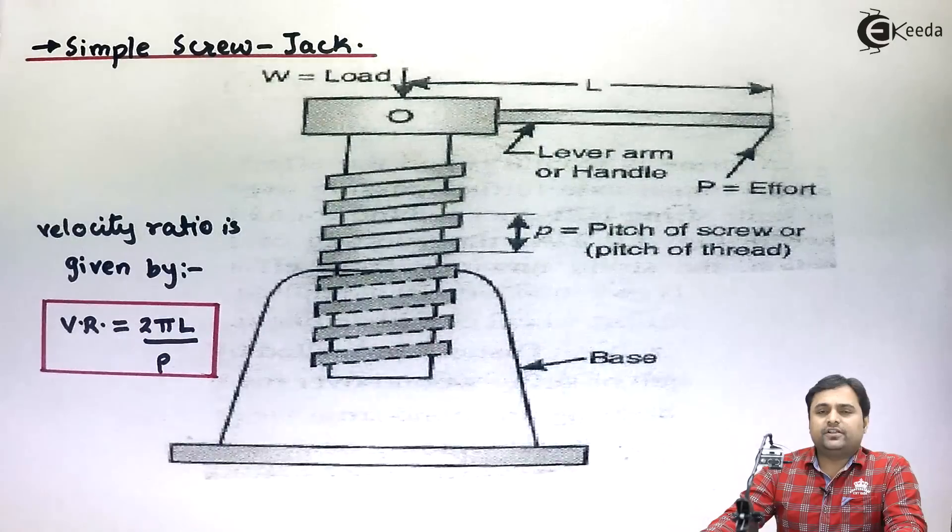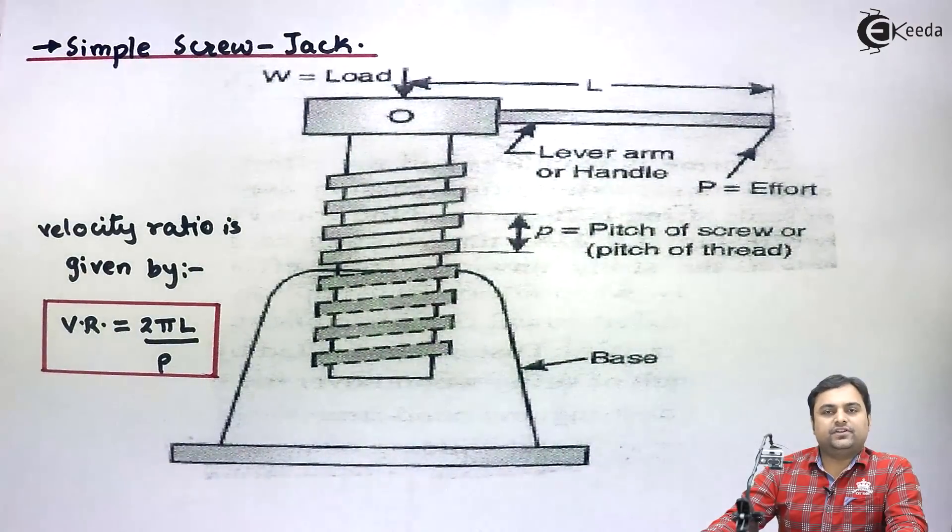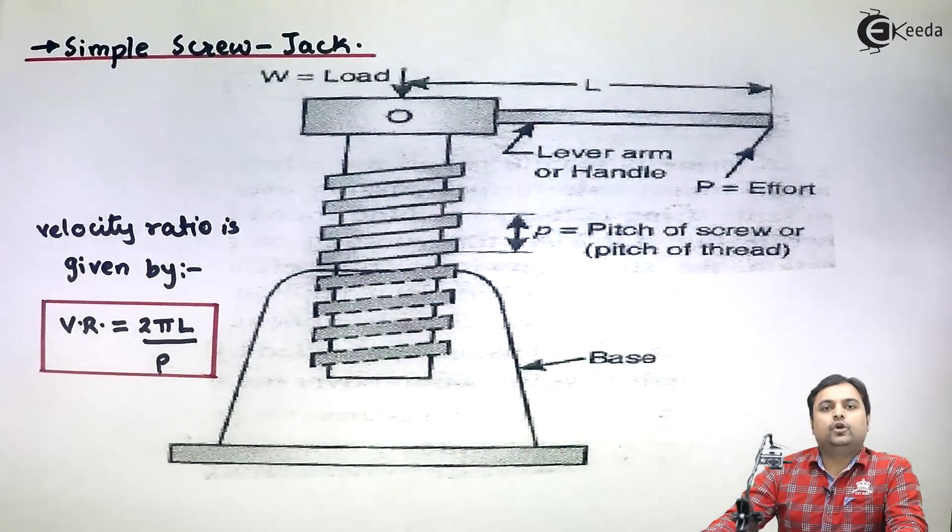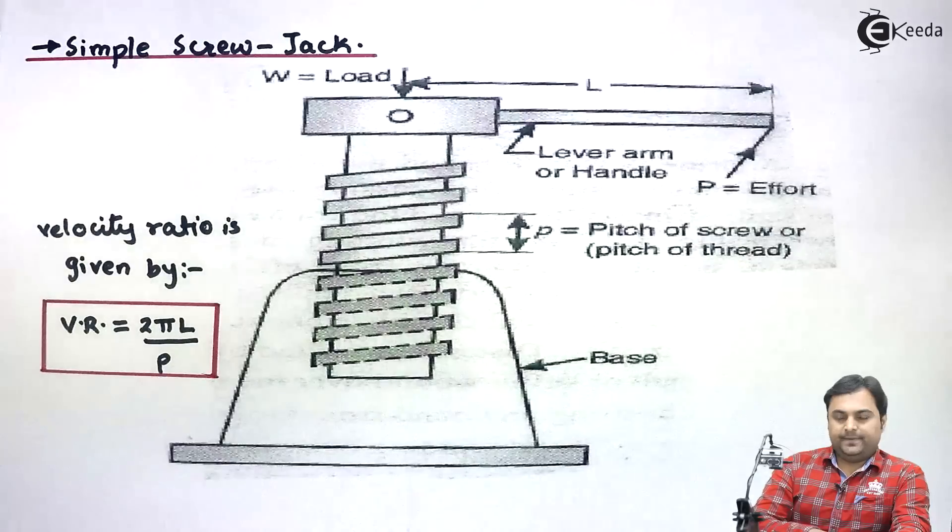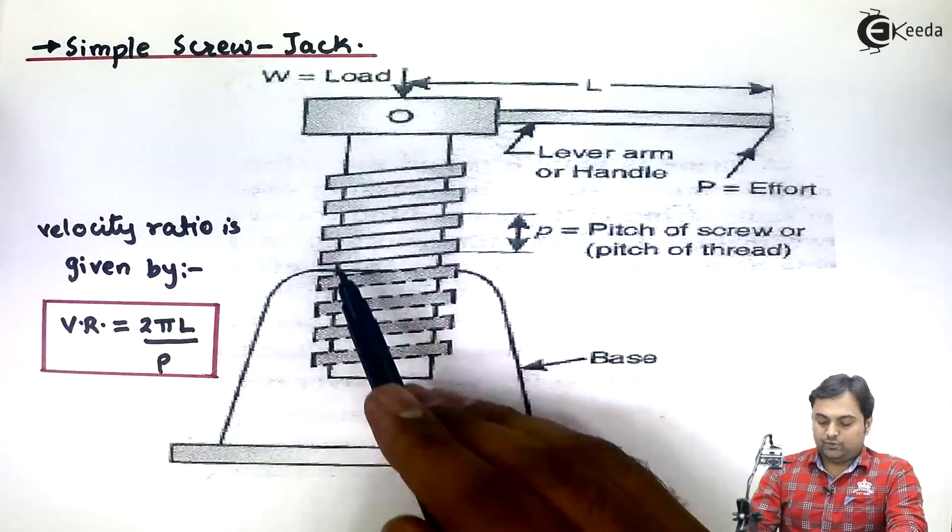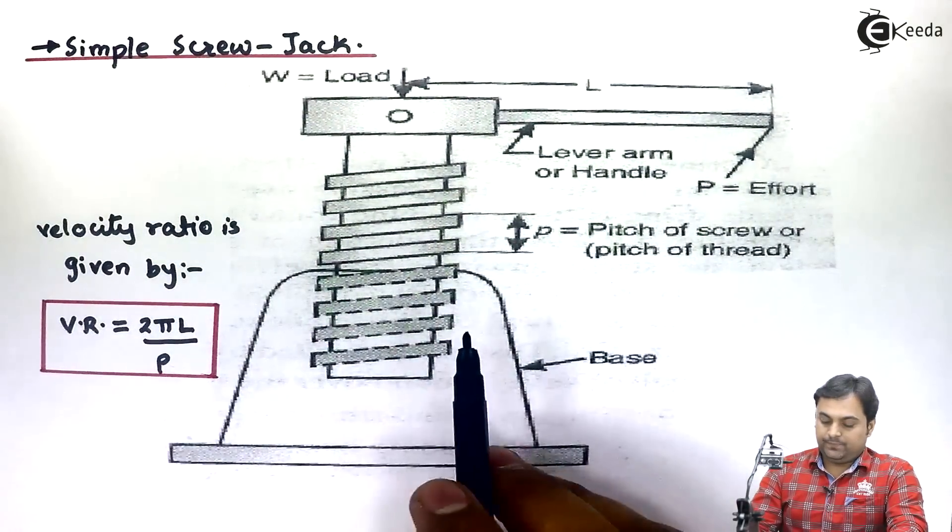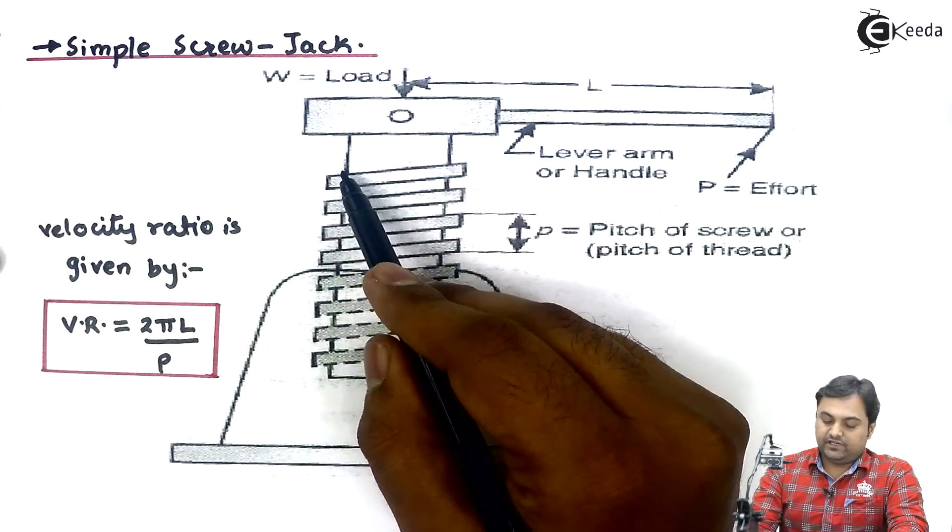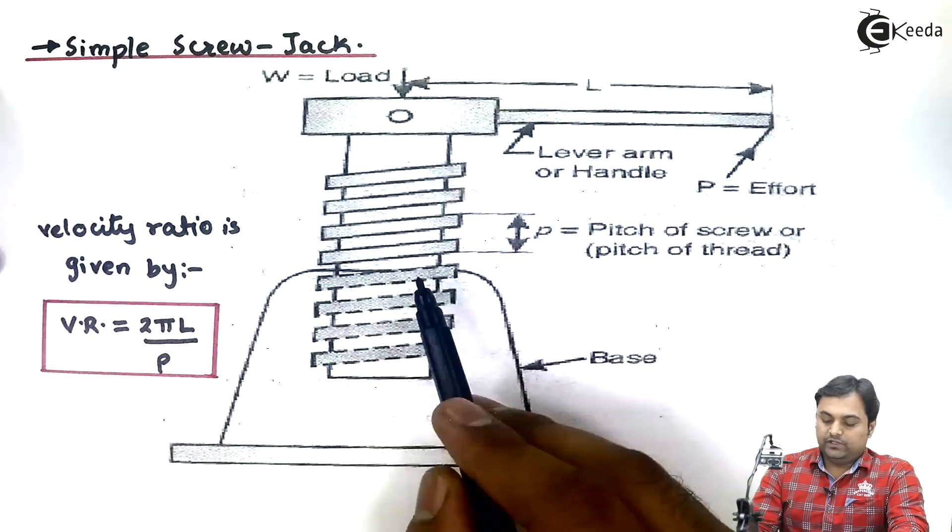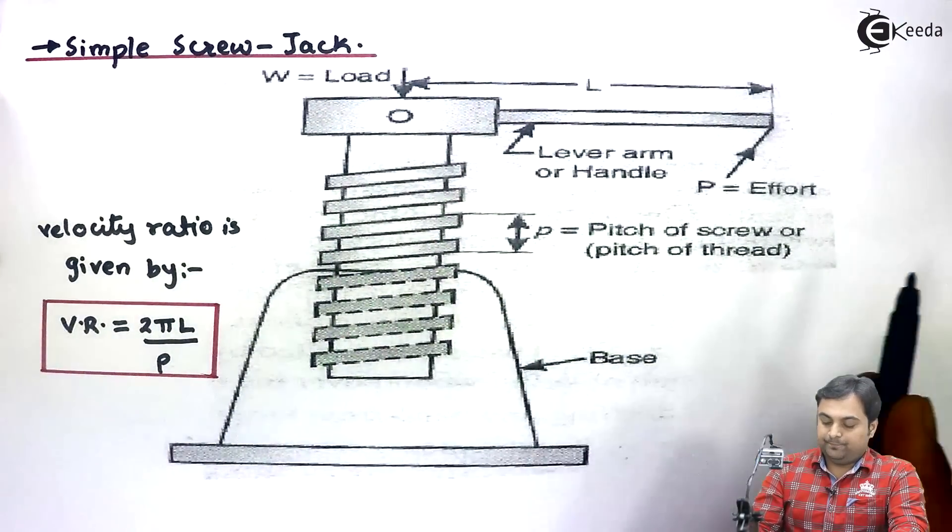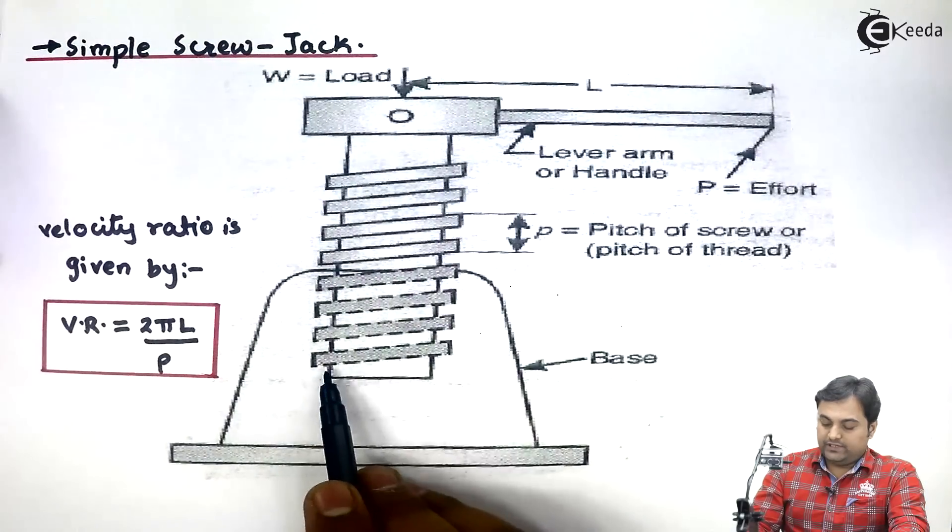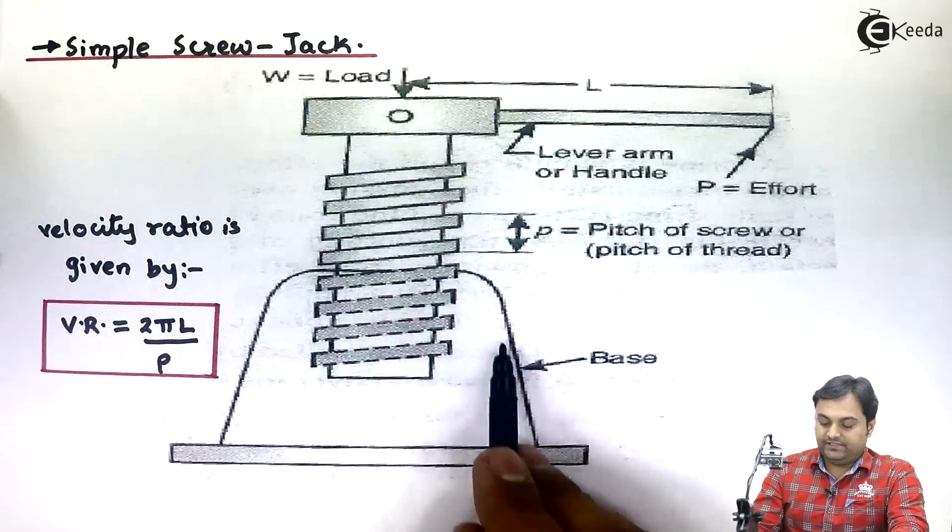Hello friends, in this video we will see construction and working of simple screw jack with its velocity ratio formula. Simple screw jack is a simple machine which consists of a member called a screw. This is the heart of the screw jack, the most important member. This screw is supported inside a nut.